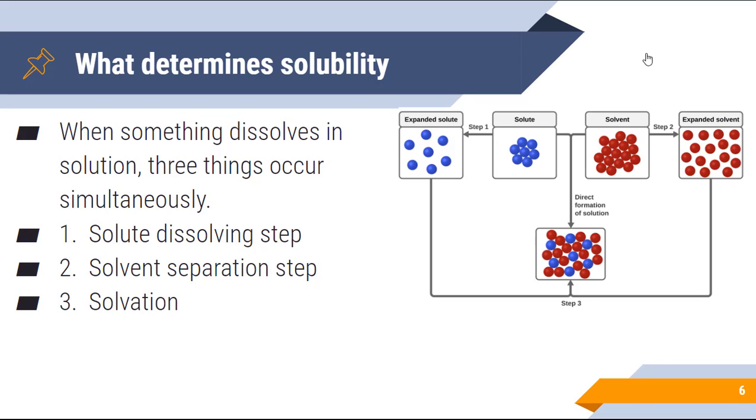So diving in a little bit deeper than what we did last year, what determines the concept of solubility? Like what determines whether something will dissolve or not? And we need to keep in mind that when we do dissolve something, three things happen simultaneously. The solute dissolves, the solvent has to separate, and then the solvent and the solute have to essentially mix together. So we'll take these one step at a time, and what I want you to think about as we go through this is the energy that is present behind all of these different reactions.